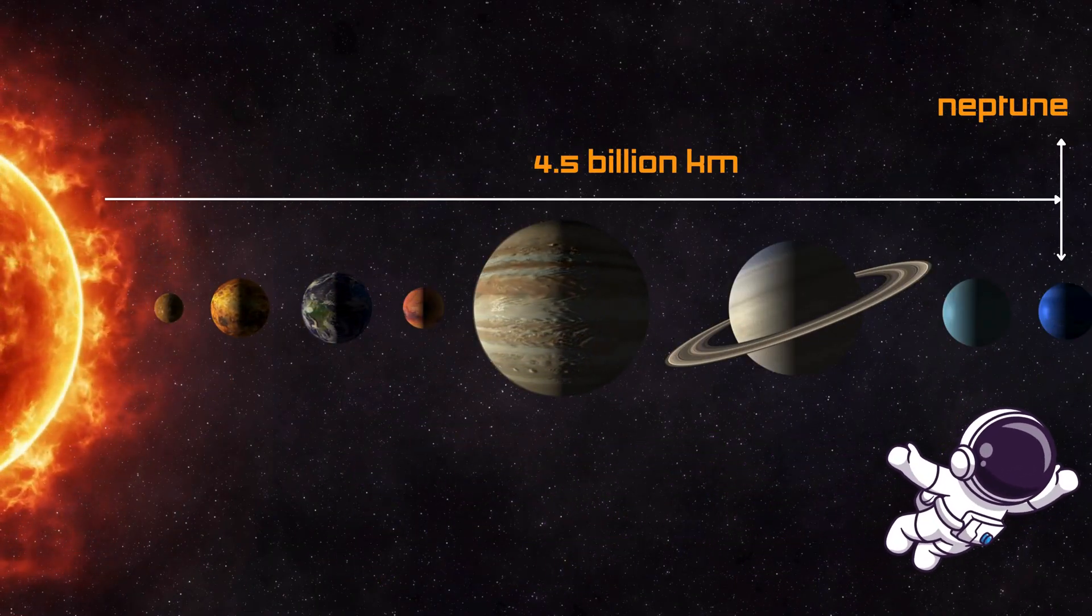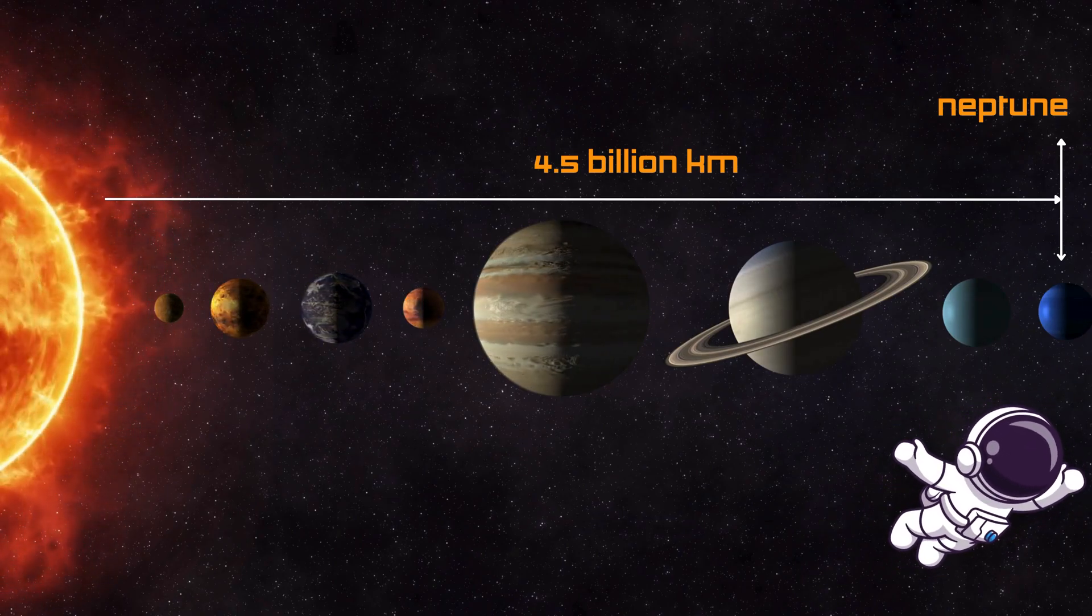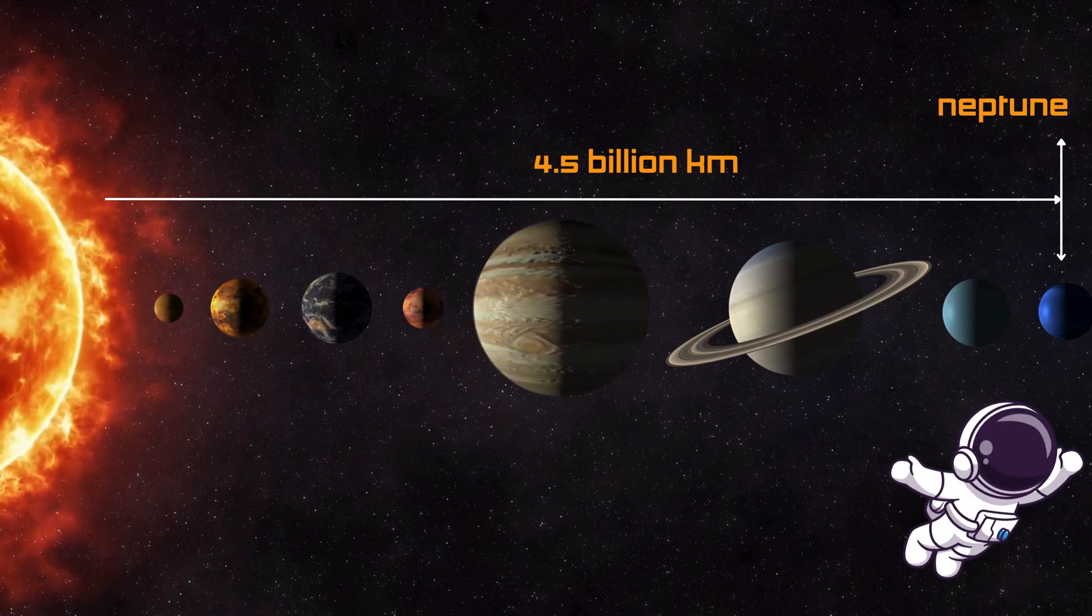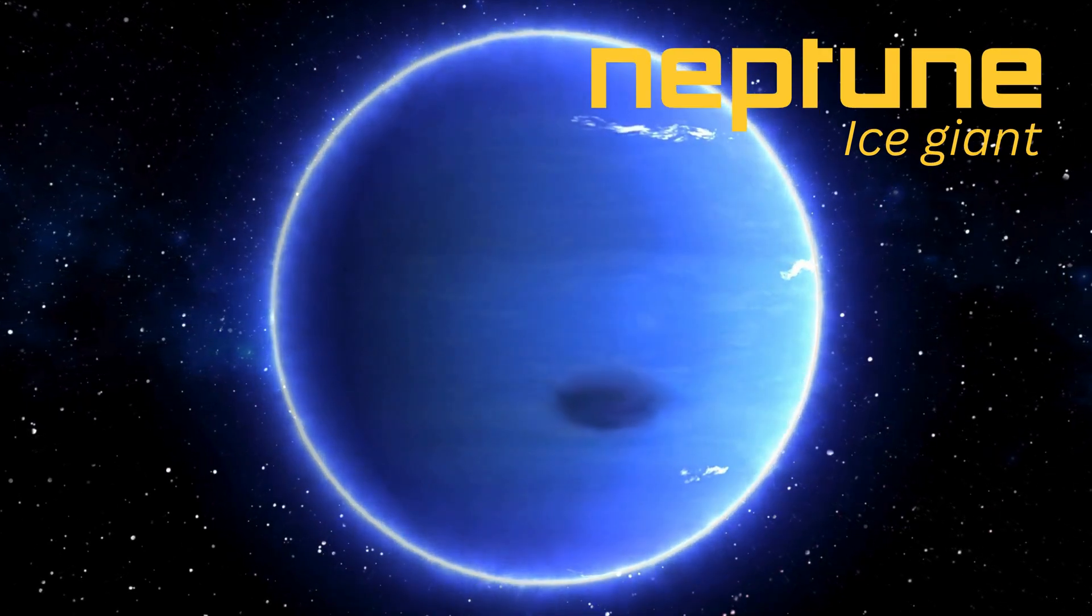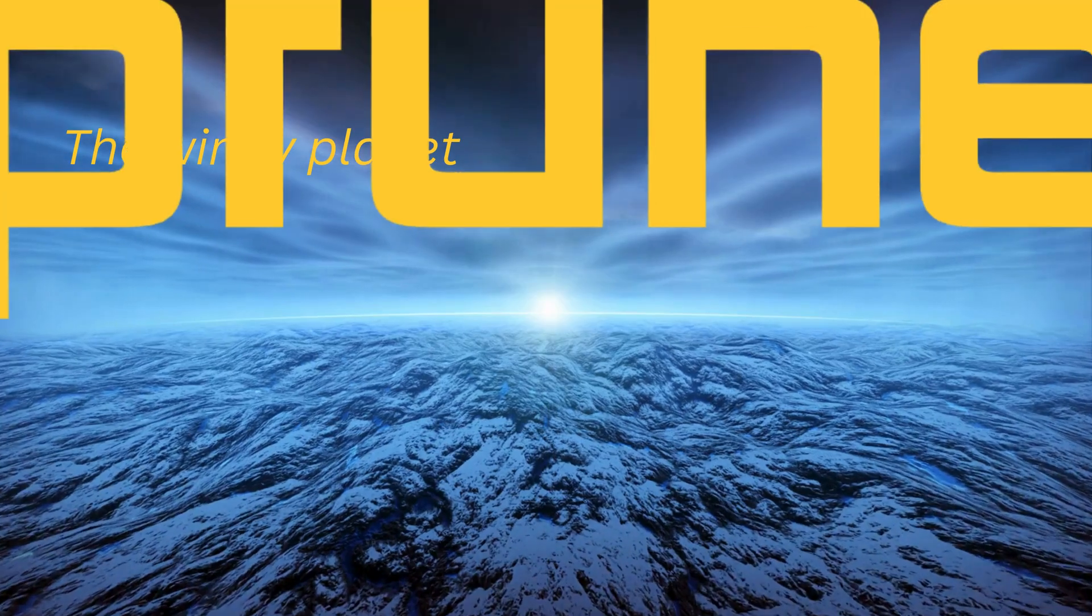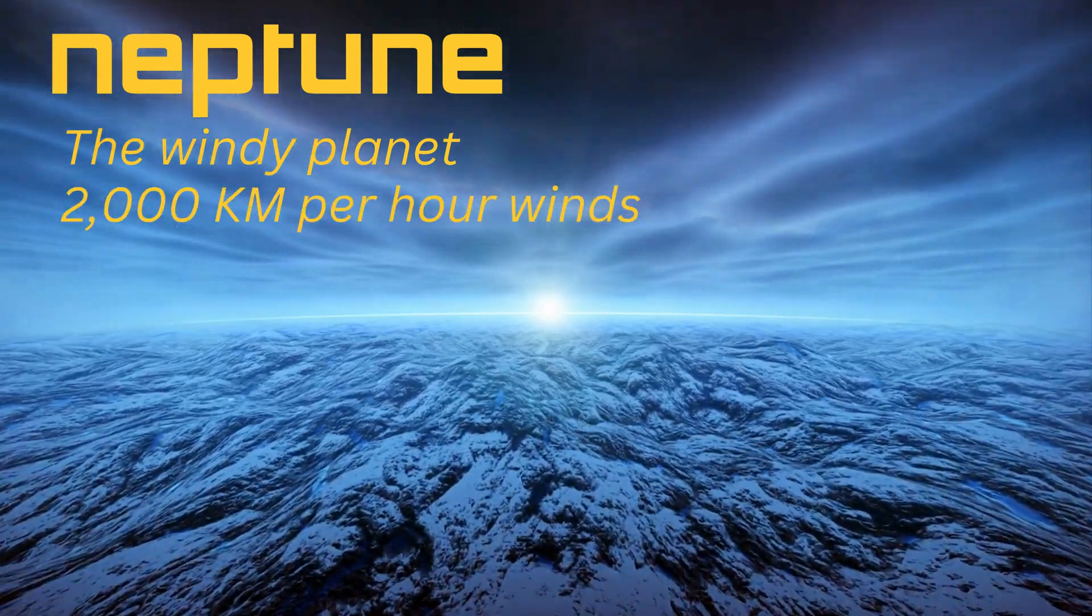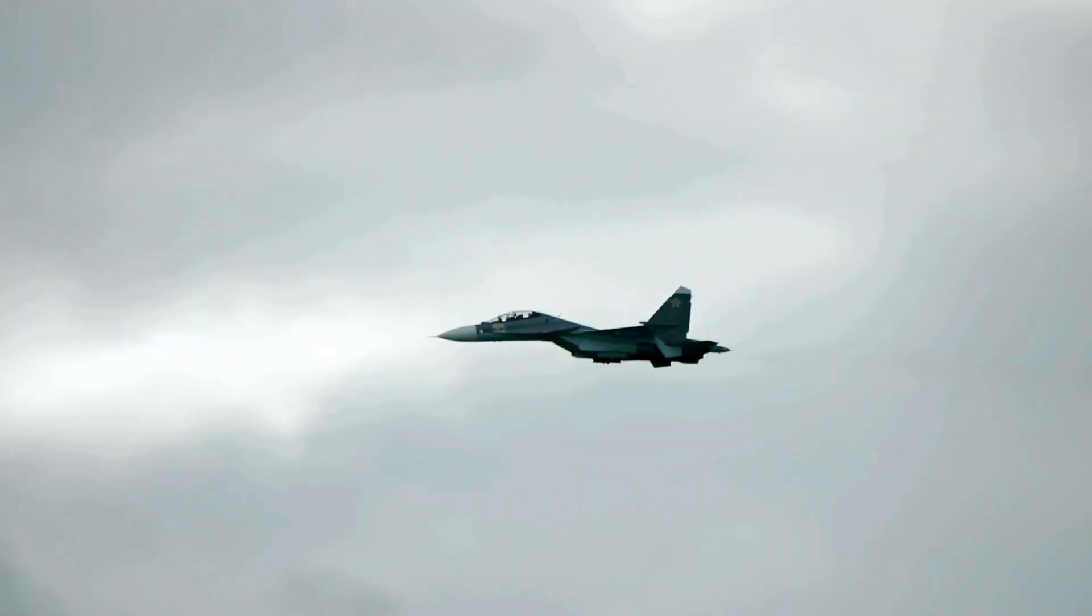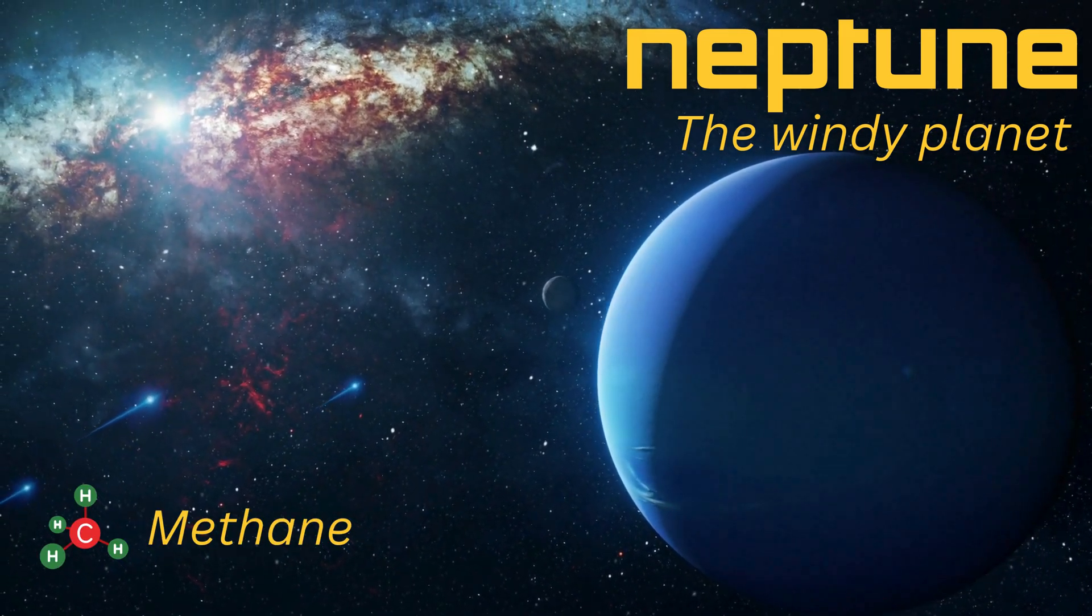Last but definitely not least, let's visit Neptune. It's the farthest planet from the sun, sitting about 2.8 billion miles, 4.5 billion kilometers away. Neptune is another ice giant, and it's known for having the strongest winds in the solar system. They can blow up to 1,200 miles per hour, 2,000 kilometers per hour. That's faster than a jet plane.